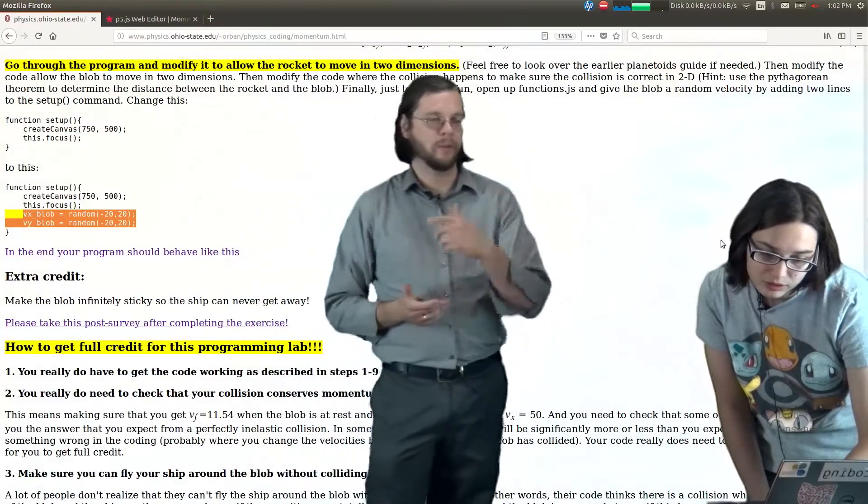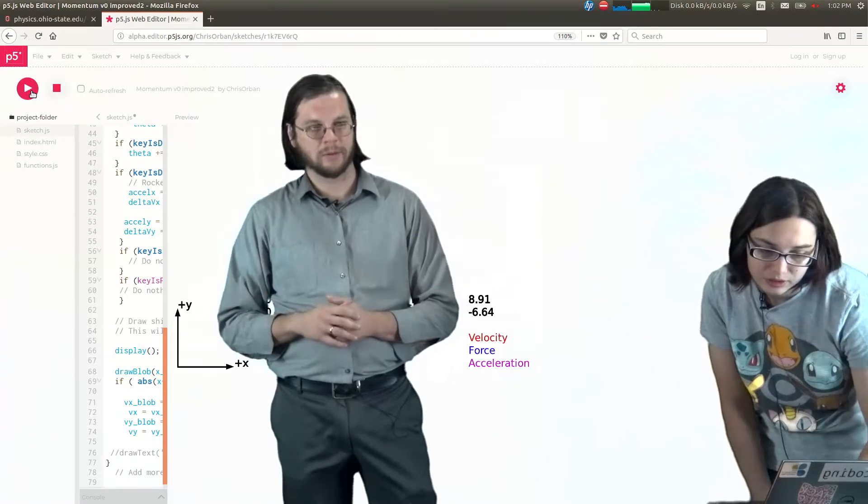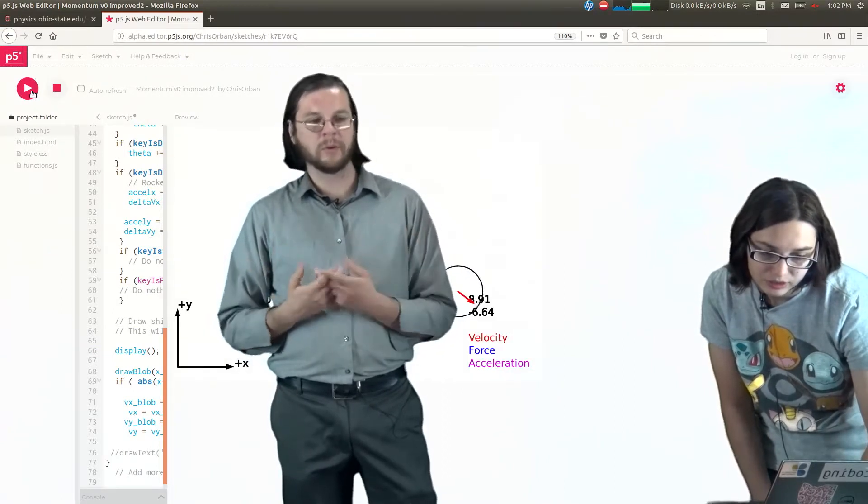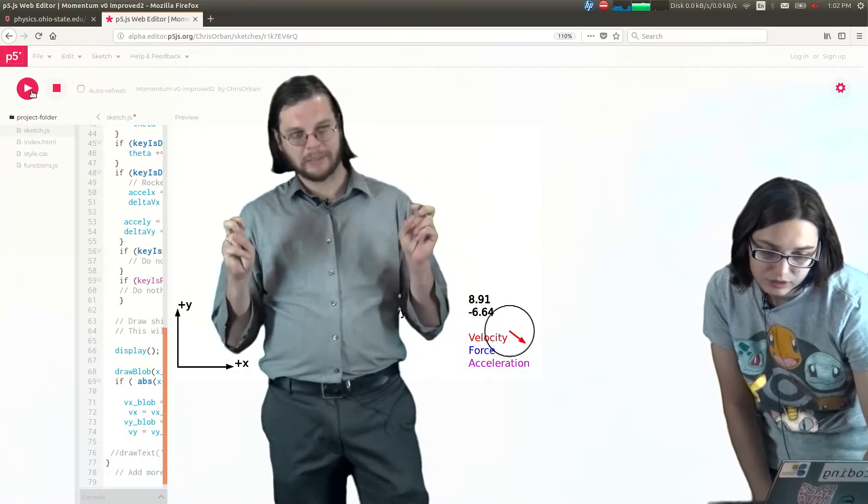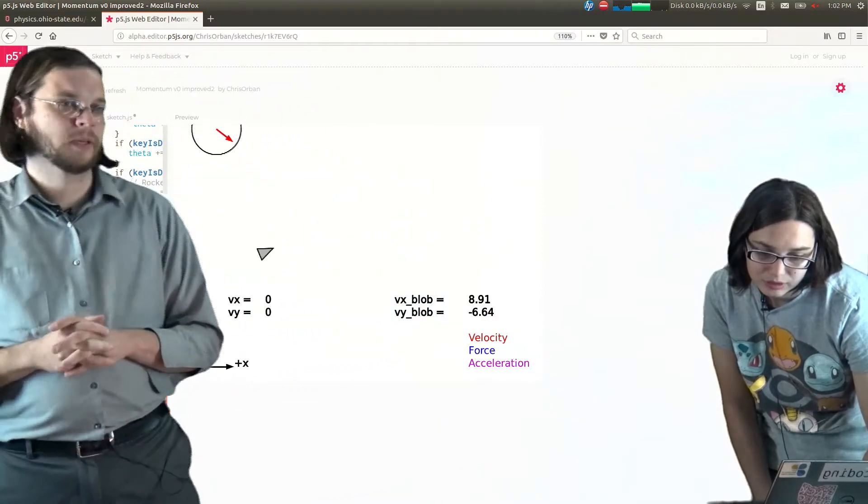Did you notice how we were able to fly away from the blob? Like if we fire our thrusters enough? What if we wanted to make the blob infinitely sticky? What could we do to modify the code to get it to do that?